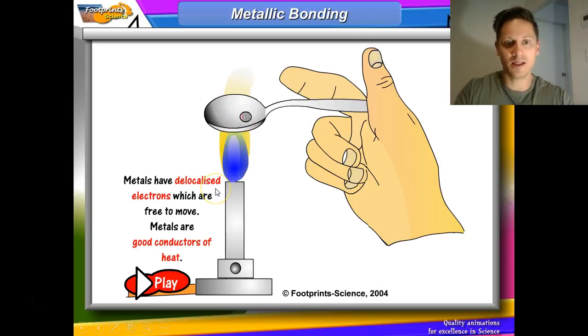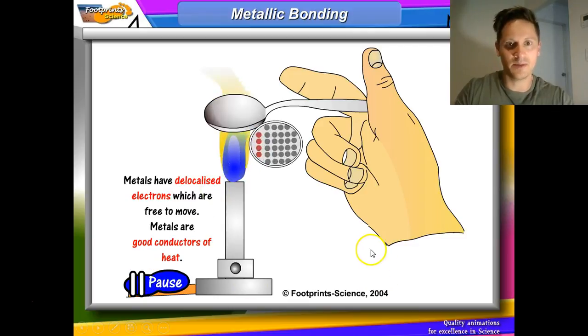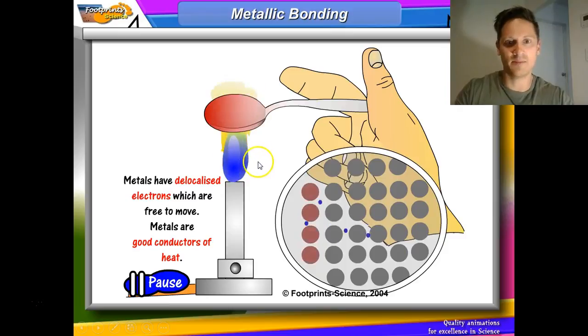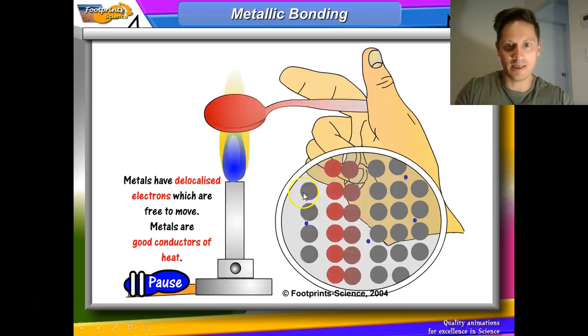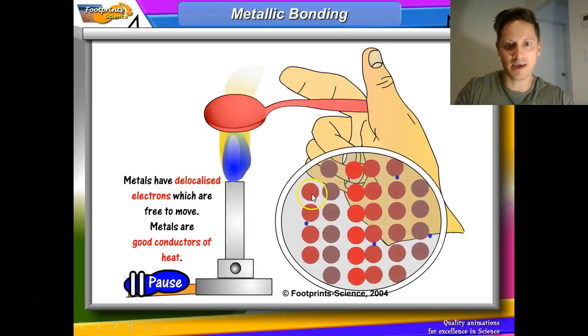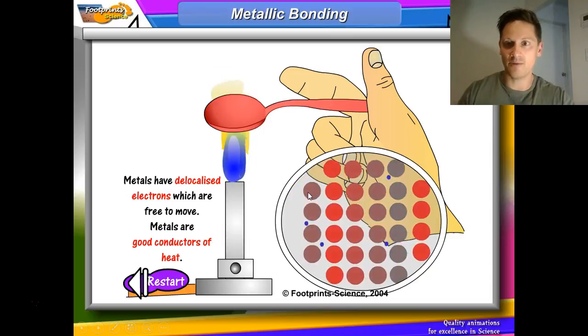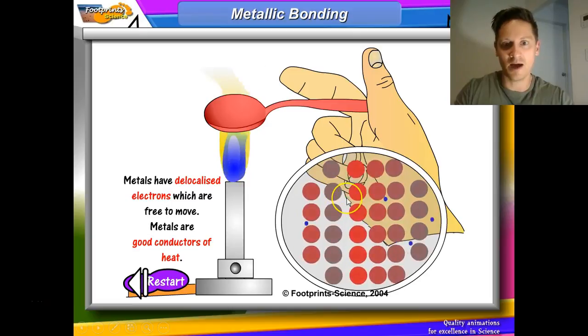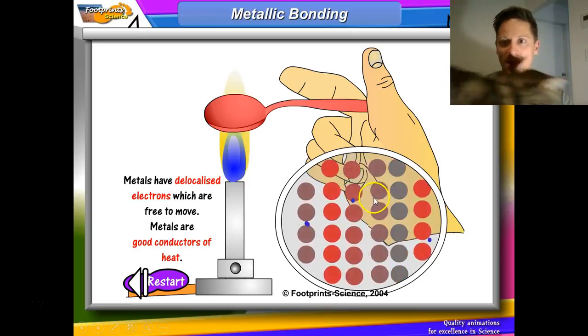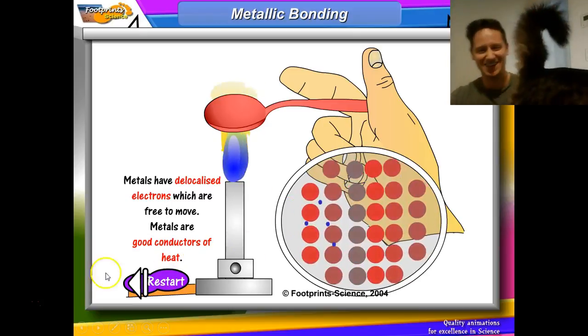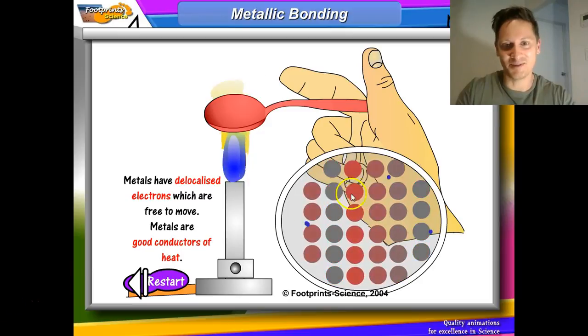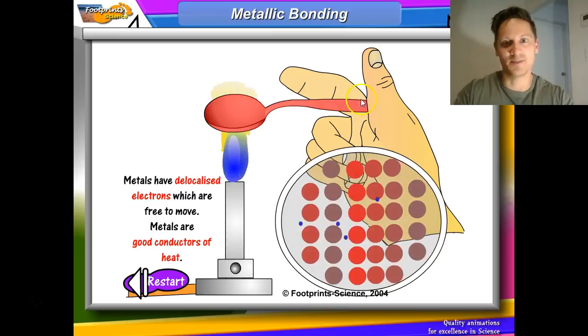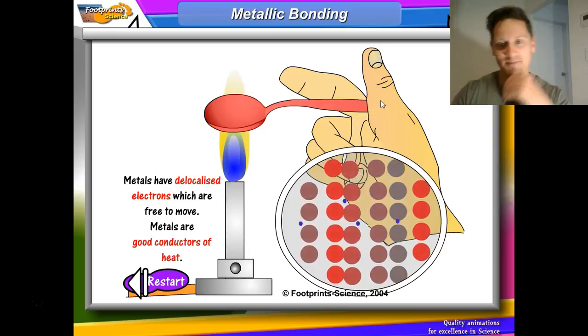Metals have delocalized electrons, which also enables them to be good conductors of heat. So here we've got the metal spoon that's being heated up by the Bunsen burner. And we can see that as the metal ions get heated, they'll start to vibrate more frequently, because they're getting more kinetic energy. And they'll collide with the neighboring atoms there. So they'll collide with those neighboring atoms there. And they'll pass on that heat. So eventually, this person that's holding that metal is going to get a bit of a burn.